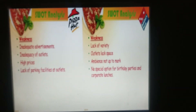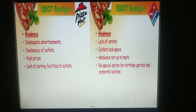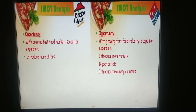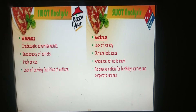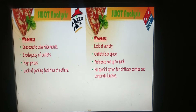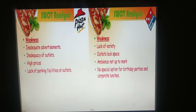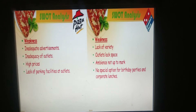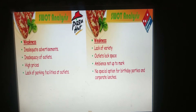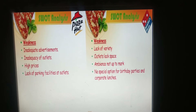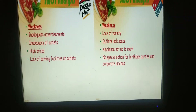The weaknesses in the SWOT analysis: Pizza Hut's weaknesses include inadequate advertisements, inadequate number of outlets, high prices, and lack of parking facilities at outlets. Domino's weaknesses include lack of variety, outlets that lack space, ambiance not up to the mark, no special options for birthday parties, and no corporate lunch options.